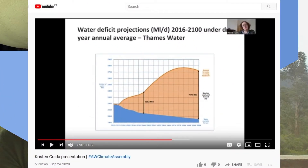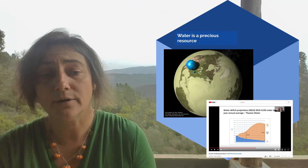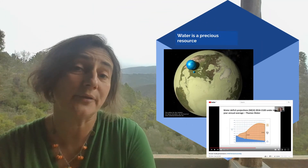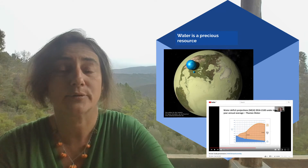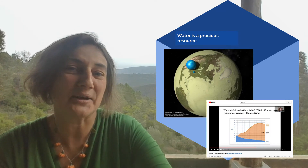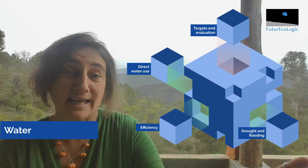This video from our local climate assembly shows a graph that water engineers for utility companies in the southeast refer to as the 'Jaws of Death' graph. It shows available water and the potential deficit as demand increases going forward. The southeast of England is one of the most water-stressed places on the planet, and these are quite significant changes we need to think about — water is a precious resource.